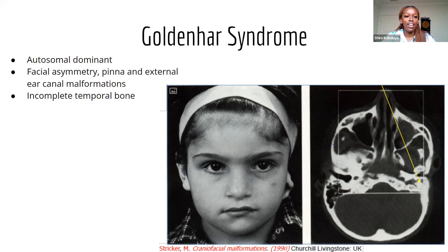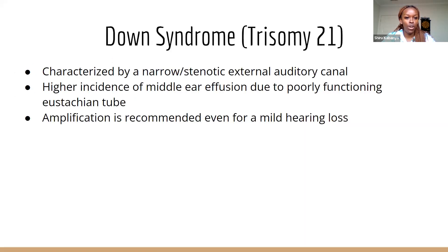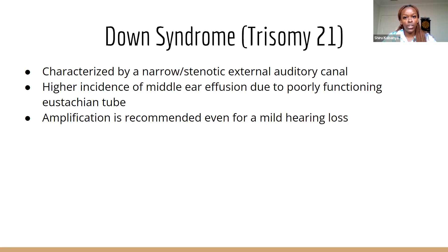Down Syndrome, or Trisomy 21, is characterized by a narrow external ear canal, making it difficult to perform otoscopy. Patients with Down Syndrome are also more likely to have middle ear effusions due to a poorly functioning eustachian tube. They present with a mixed or sensorineural hearing loss due to cochlear abnormalities, malformations or erosions, and fixation of the malleus and incus due to middle ear disease. Amplification is recommended even for milder hearing losses.